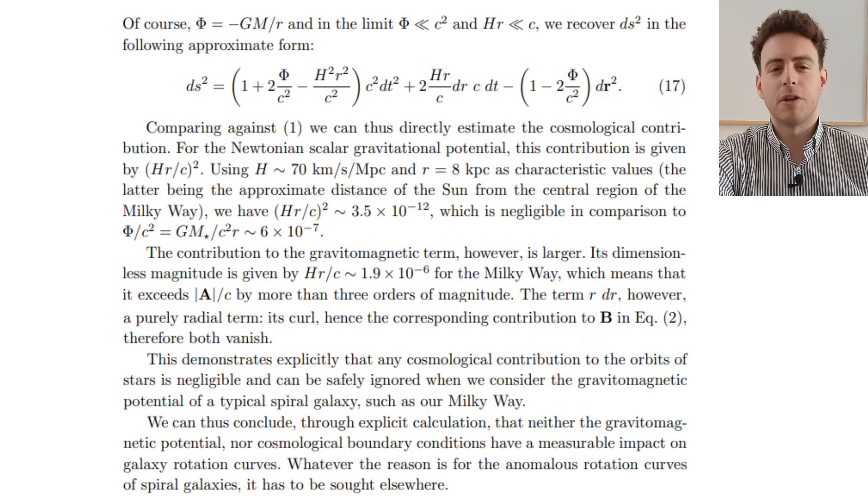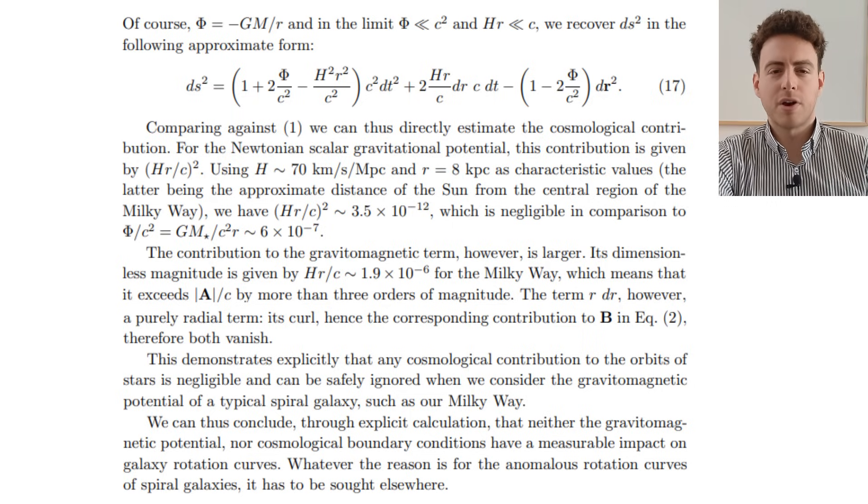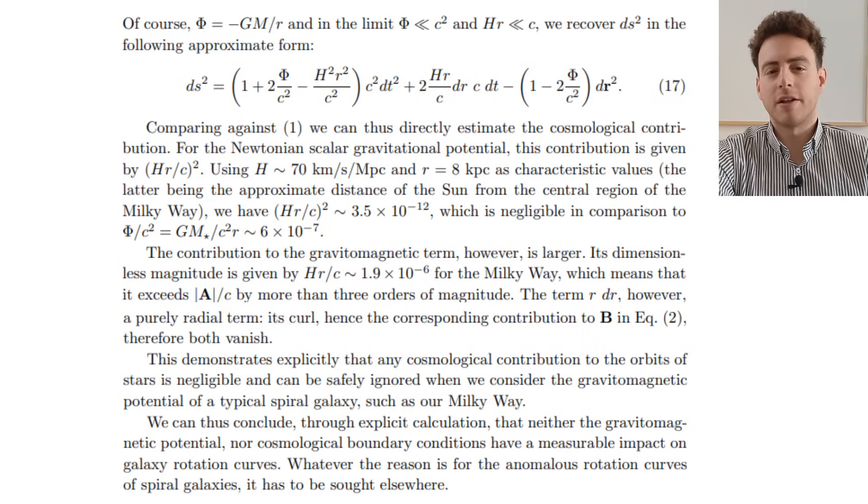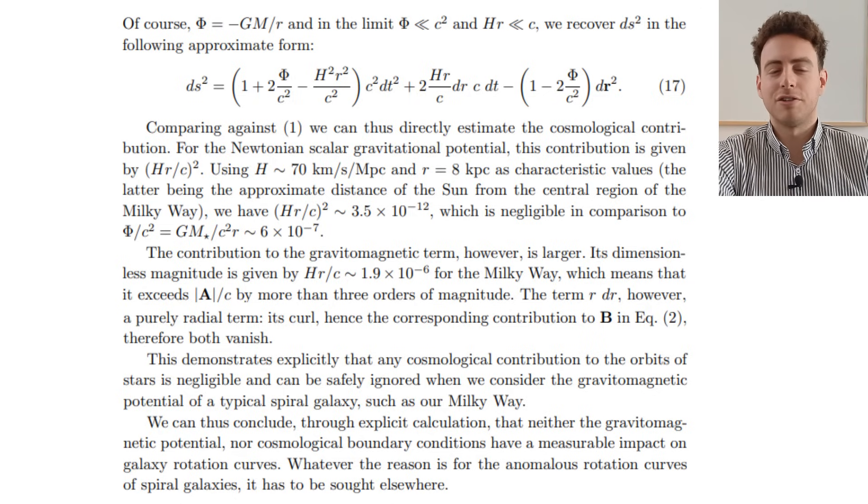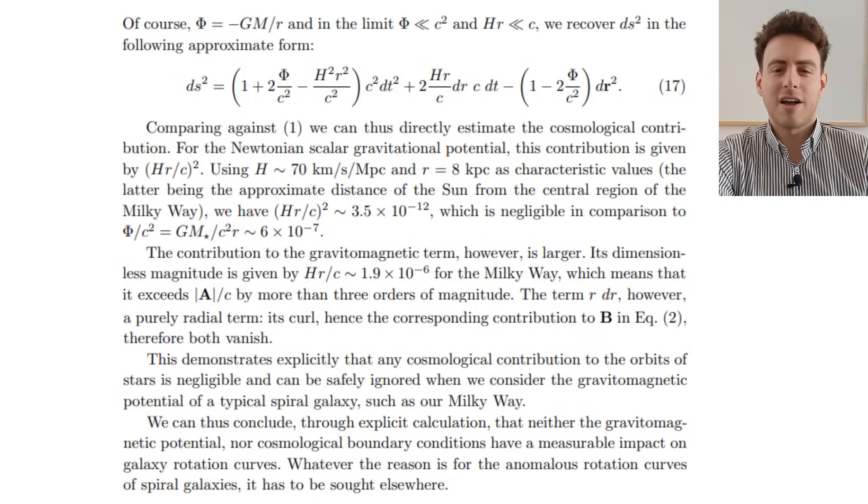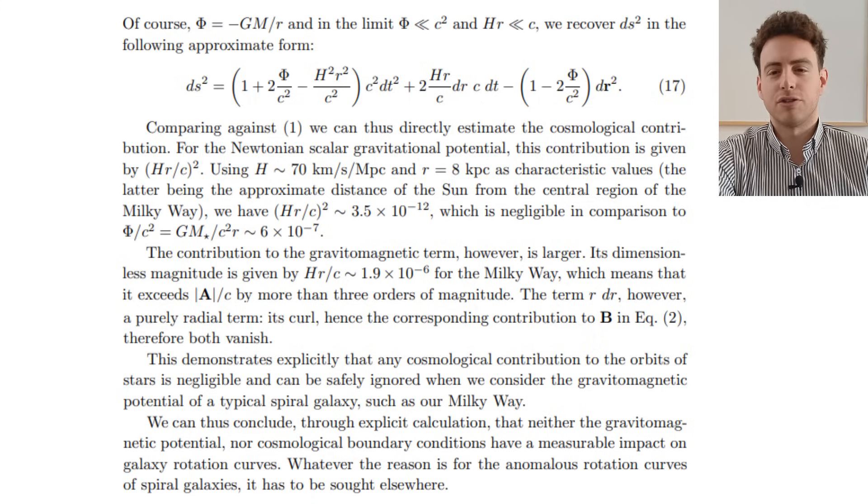and although the contribution from the gravitomagnetic term is not small, it's a pure radial term, and its curl and contribution to B vanishes. So Victor concludes that boundary conditions can be ignored, and that they cannot resolve the problem of galaxy rotation curves either.